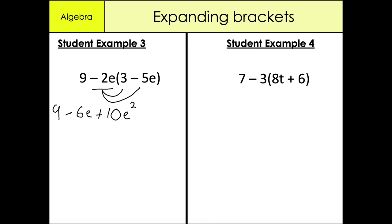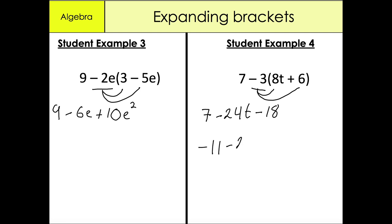The next example is 7 - 3(8t + 6). I put the 7 aside and expand the brackets: minus 3 multiplied by 8t gives minus 24t. Minus 3 multiplied by 6 gives minus 18. Now I collect like-for-like terms: 7 minus 18 is minus 11. So our answer is minus 11 minus 24t.